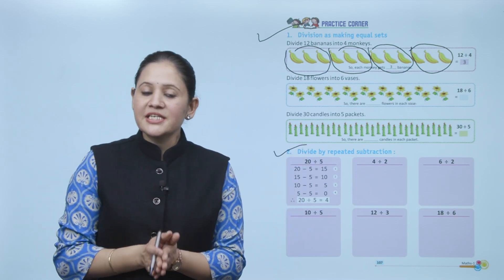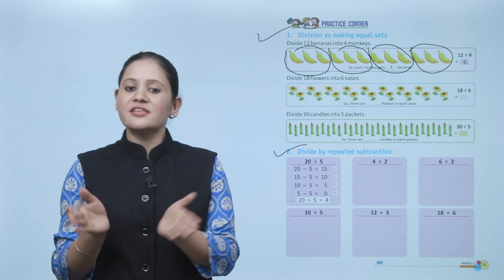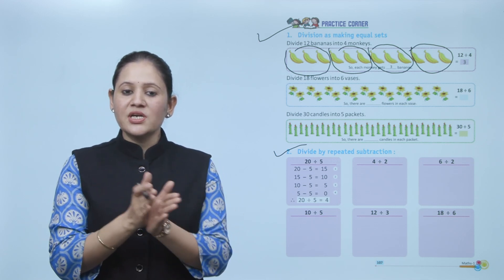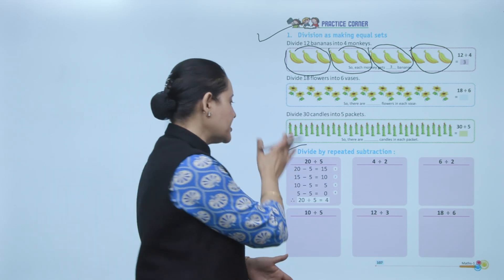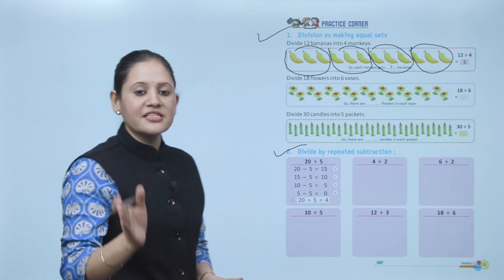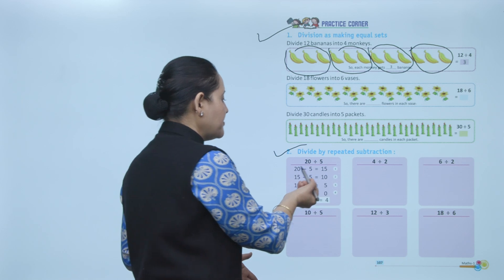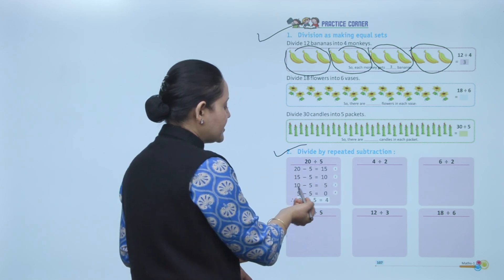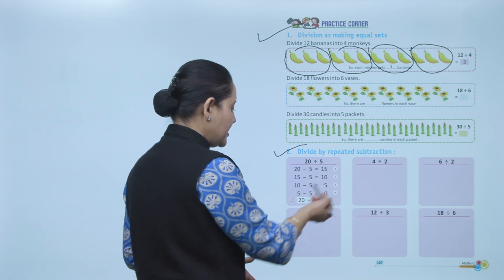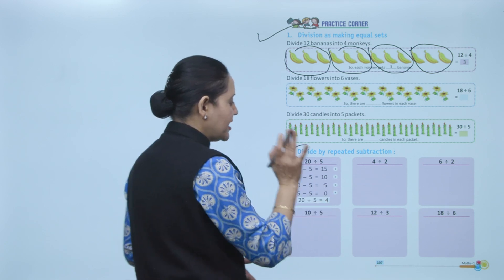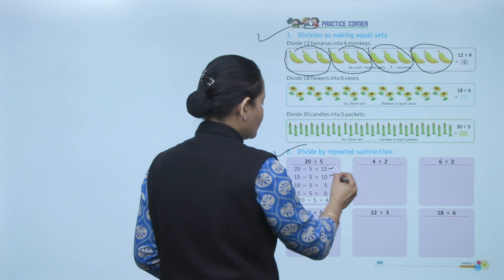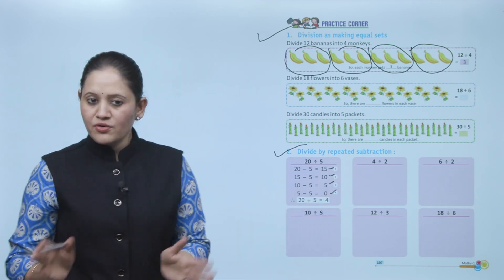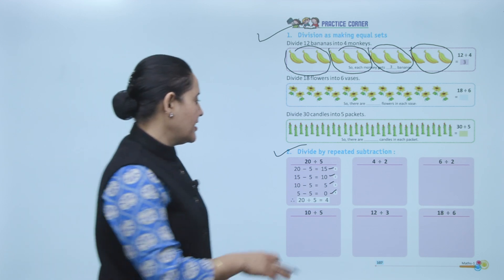Just as multiplication is the same as repeated addition, division is the same as repeated subtraction. First example: twenty divided by five. Twenty minus five equals fifteen — one time. Fifteen minus five equals ten — two times. Ten minus five equals five — three times. Five minus five equals zero. So how many times did we subtract? One, two, three, four. So twenty divided by five equals four.